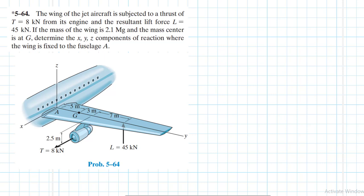Hello, I welcome you all. Today we are going to be solving this problem. It reads: the wing of a jet aircraft is subjected to a thrust of T equal to 8 kilonewtons from its engine, and the resultant lift force L is equal to 45 kilonewtons. The mass of the wing is 2.1 megagrams and the mass center is at G. Determine the x, y, z components of the reaction where the wing is fixed to the fuselage at A.